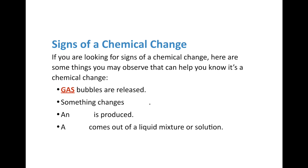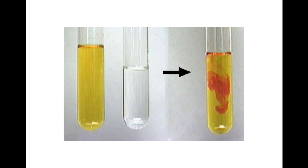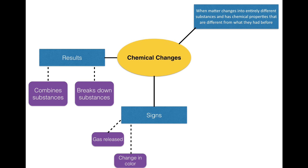The next sign is that something changes color. That's often a good indicator that a chemical change occurred. For instance, a clear chemical gets poured into a yellow chemical, and immediately you see red appear. That change in color from clear to red is a sign that a chemical change took place. We'll add 'change in color' to our organizer and revisit that concept later in this lesson.